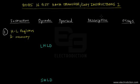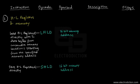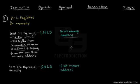Let's start with LHLD first. The LHLD instruction is basically used to load the HL registers directly with two data bytes so that we can have a 16-bit data. These two data bytes come from consecutive memory locations, starting from the specified 16-bit memory address.